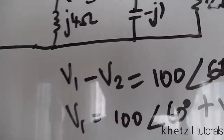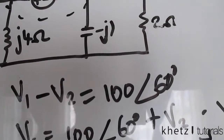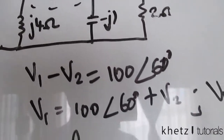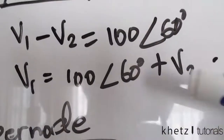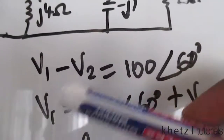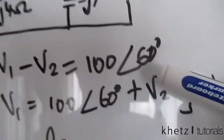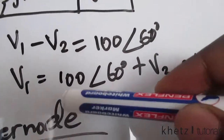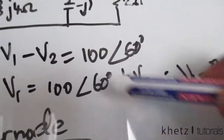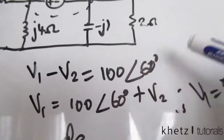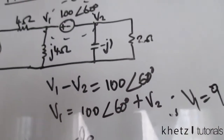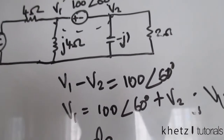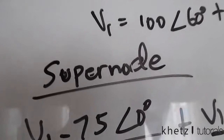This is our first equation. We have two variables and therefore we need two equations to successfully solve this. After that, I manipulated this formula by taking V2 to the other side of the equal sign, where the value of the voltage source is added. So now we move on to the second equation, which is the equation of the super node.